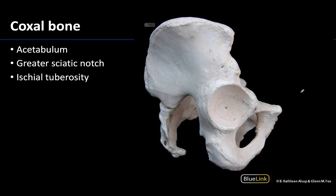Moving to the coxal or hip bones — looking at this lateral view of the pelvic girdle, you can see the sacrum posteriorly. The large prominent socket placed laterally is called the acetabulum, which is the socket of the hip joint that receives the head of the femur. Compared to the glenoid fossa of the scapula, the fit between the head of the femur and the acetabulum is quite a bit tighter.